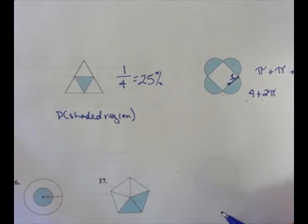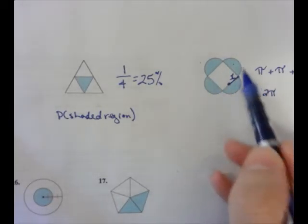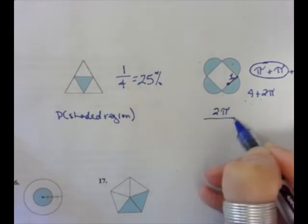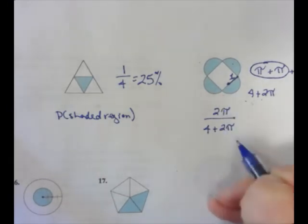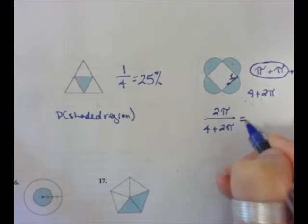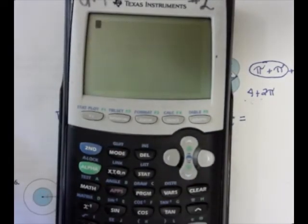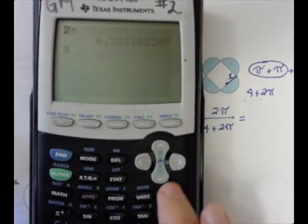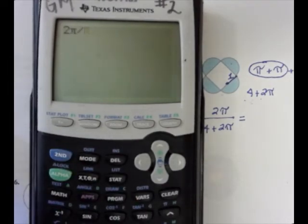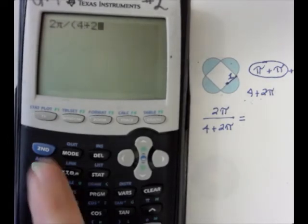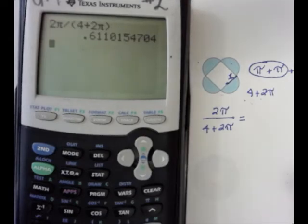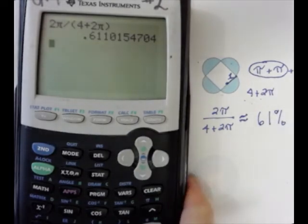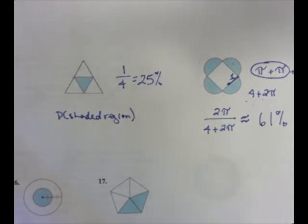So what is the probability that if I throw it, it's going to land in one of these shaded regions? Well, this is the shaded region. So it's going to be 2 pi over 4 plus 2 pi. And I can't cancel those 2 pi's. There's no such thing as doing that. So I do this in my calculator. 2 pi divided by parentheses 4 plus 2 pi. And that gives me about 61%. So I'm going to put a little squiggle here, and it's about 61% because 0.61 is about 61%. And so that's the geometric probability for that.